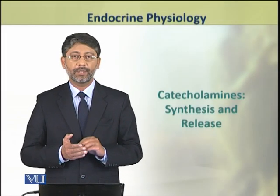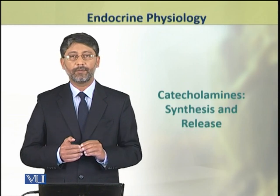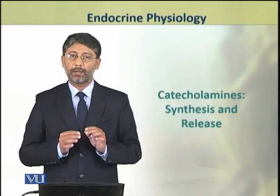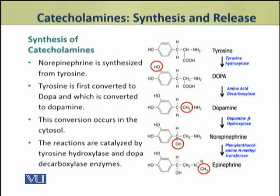In this topic we shall discuss the synthesis and mechanism of release of catecholamine hormones. The catecholamines, which include epinephrine and norepinephrine, are synthesized from tyrosine. Tyrosine is an amino acid which is converted into norepinephrine through a chain of reactions — first transformed into DOPA, then this DOPA is transformed into dopamine.